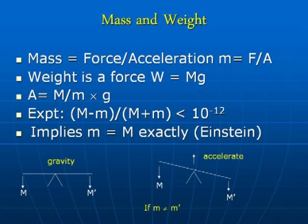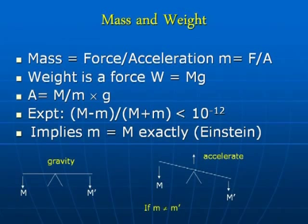If we combine these two things, we get a simple formula: the acceleration any object experiences when released in Earth's gravitational field looks like the acceleration due to gravity, little g, times the ratio of these two types of mass. If they were different — say big M was twice little m for one object and half for another — they would fall with different accelerations. So if the two types of mass are identical and equal, then everything falls with the same acceleration in Earth's gravitational field.